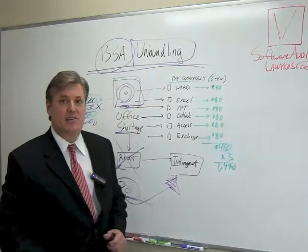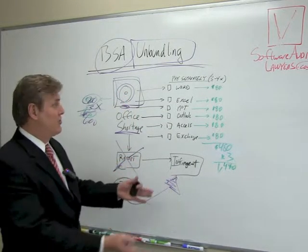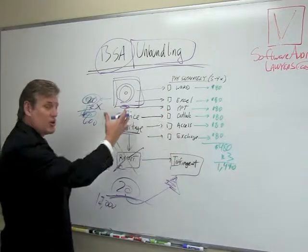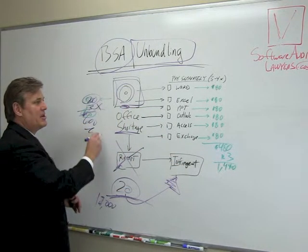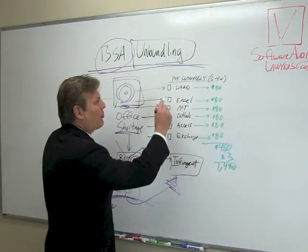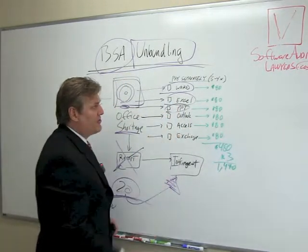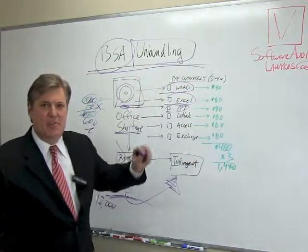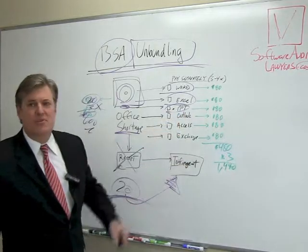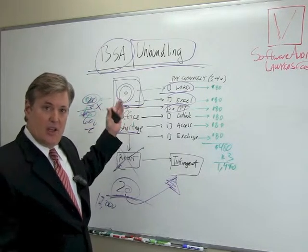Now what the BSA might say is: that $12,000 figure would have been the case had you bought Microsoft Office properly — which includes all the packages like Word, Excel, PowerPoint, Access, Exchange, and Outlook. But because you're an infringer — a copyright software pirate — we're going to unbundle. So now you owe separately for Word, you owe for Excel, you owe for PowerPoint, you owe for Outlook, you owe for Access, you owe for Exchange. Let's just use $80 per component as our example number.